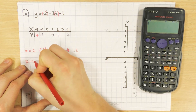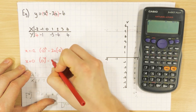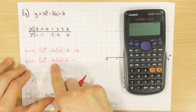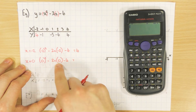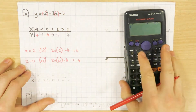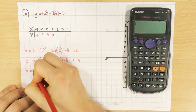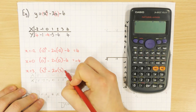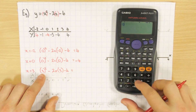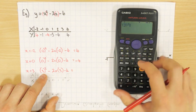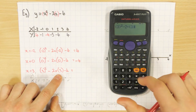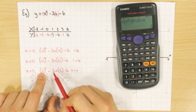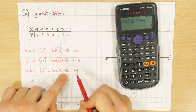Let's do x equals 0. In brackets, 0 squared, minus 2 times, in brackets, 0, then take away 4. 0 squared is 0; 2 times 0 is 0; so 0 take away 0 is nothing — minus 4 is obviously going to be minus 4. And last one, when x is 3: in brackets, 3 squared, take away 2 times, in brackets, 3, then take away 4. We're going to have minus 1. 3 squared is 9, 2 times 3 is 6, so 9 take away 6 gives you 3, take away 4 — there's your minus 1.